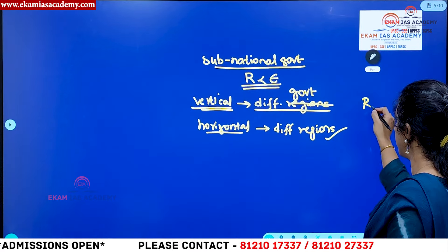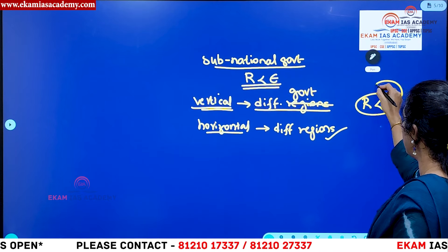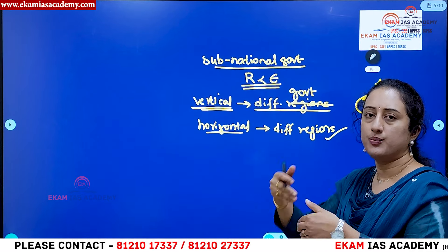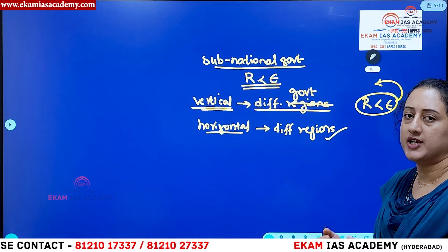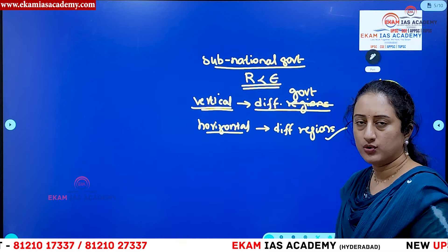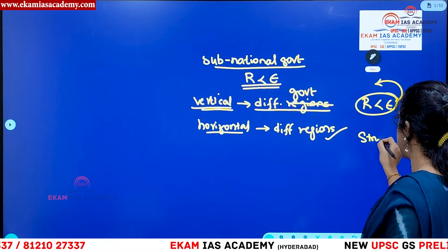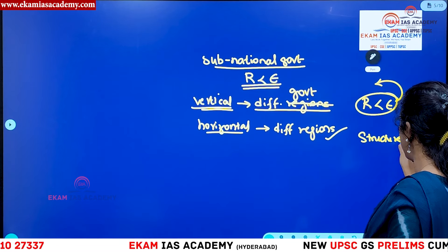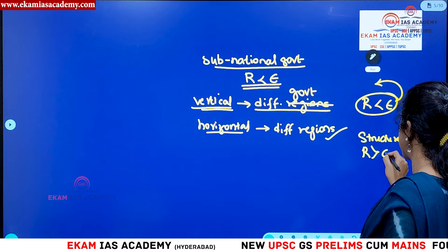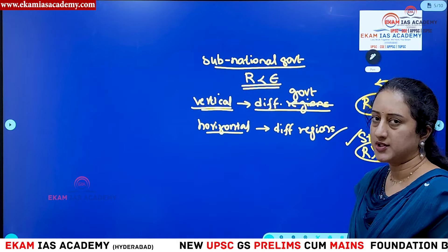That means revenue is very less than expenditure and governments become more dependent on funds from the upper level of government — state or central — for fulfilling their needs. This is a situation which is not at all good for the economy. This is a structural problem, and if you augment revenue sources more than expenditure, this problem can be resolved.